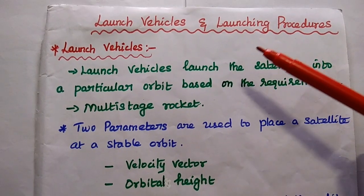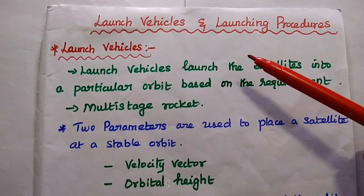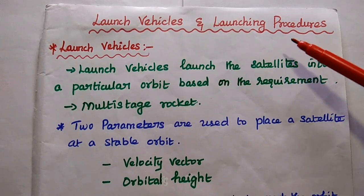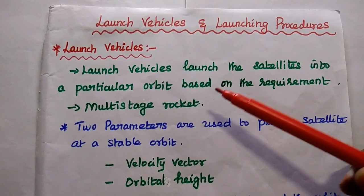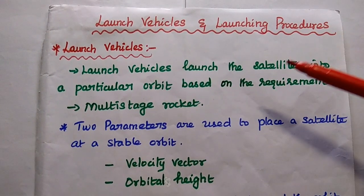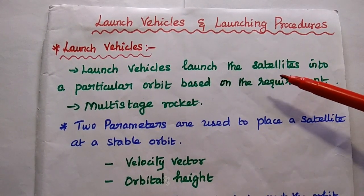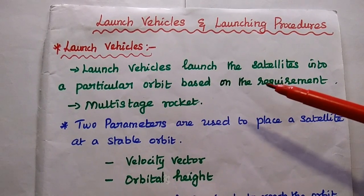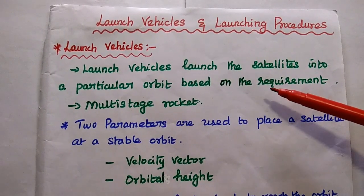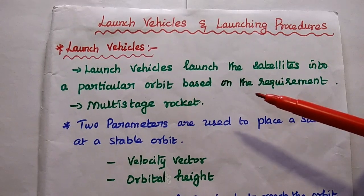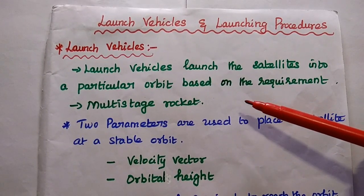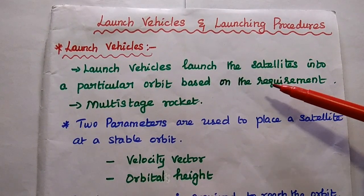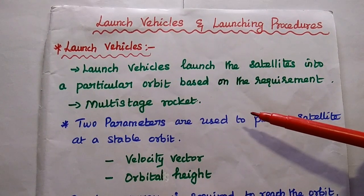Dear students, now we are going to discuss launch vehicles and launching procedures in satellite communication. Launch vehicles are mainly used to launch the satellite directly into a particular orbit based on the requirement. Simply, the launch vehicles are used to directly inject the satellite into the required orbit.